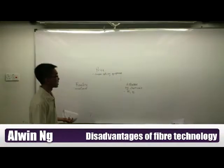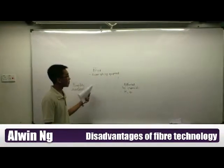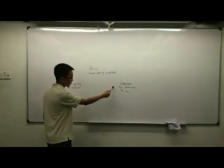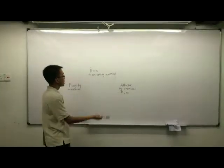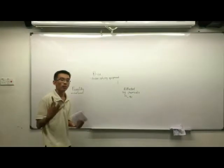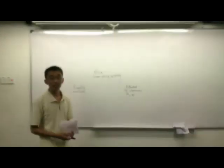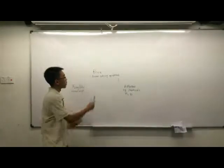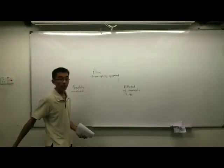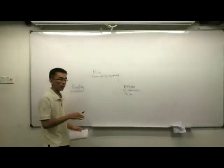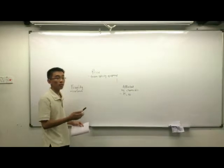Alright, I'm going to explain the disadvantages of fiber optics. I'm going to pinpoint three different factors: price, fragility, and being affected by chemicals. First is price. Even though fiber optic is made from sand, which is in abundance and rather cheap compared to copper wire, because it requires fusion splicing equipment, therefore the prices per meter for fiber optic wire is higher than copper wire.